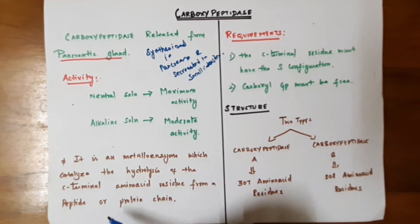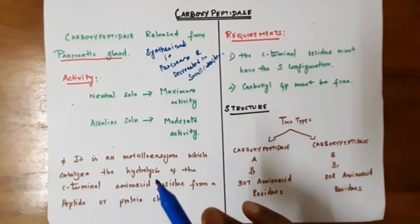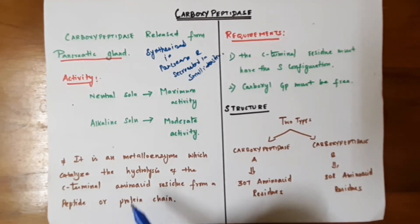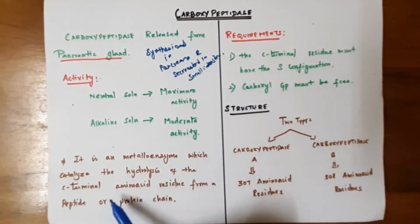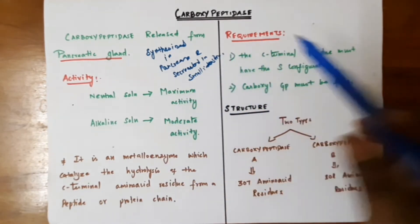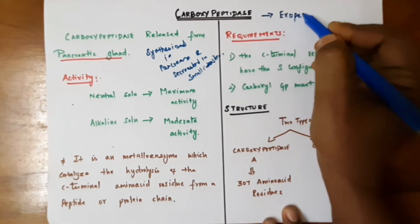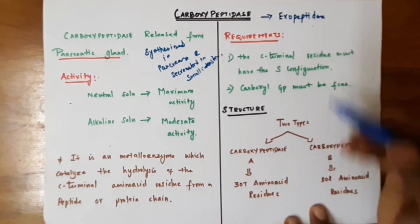Proteins are made up of several peptide units combined together. Peptides are made up of small amino acid units combined together to form peptides, and peptides combine to form the protein molecule. In the protein molecule there is an N-terminal residue and a C-terminal residue, and carboxypeptidase mainly catalyzes the C-terminal amino acid residue.